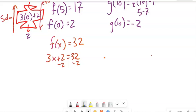Subtract 2 from both sides. 3x equals 30. Divide by 3. x equals 10.